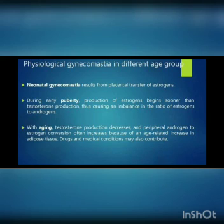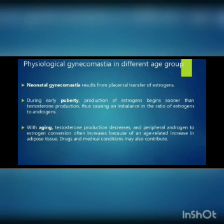During early puberty, production of estrogen begins sooner than testosterone production, causing an imbalance in the ratio of estrogen to androgen. Testosterone production should begin sooner and in greater amounts, but instead estrogen production begins earlier and in higher amounts, leading to pubertal gynecomastia.